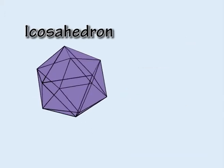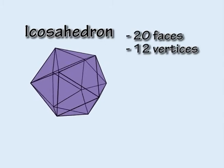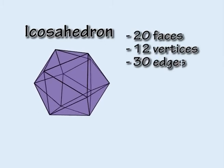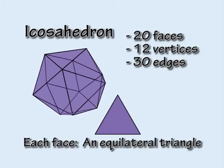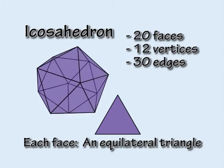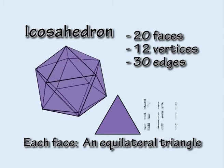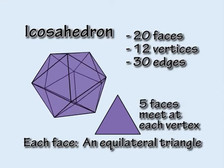Finally, the icosahedron has twenty faces, twelve vertices, and thirty edges. As with the tetrahedron and octahedron, each face is an equilateral triangle. But now, five triangular faces meet at each vertex.